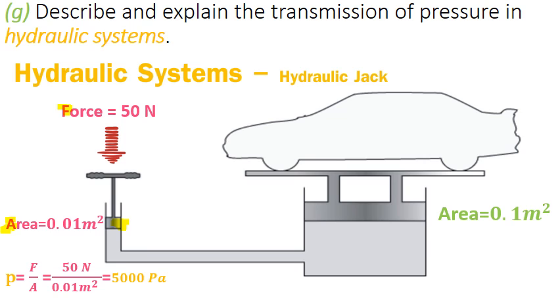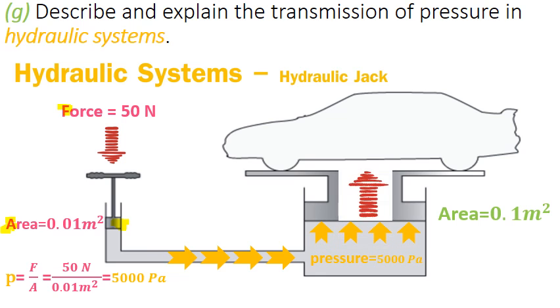This pressure will transfer through the liquid in the pipe and travel to the other end. This same pressure of 5000 pascals will act on the output piston, producing an output force. To calculate this force at the output piston, we use force equals pressure times area. With a pressure of 5000 pascals and an output piston area of 0.1 m², multiplying these values gives us 500 newtons.